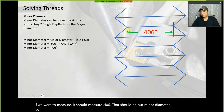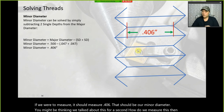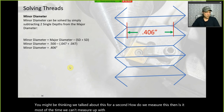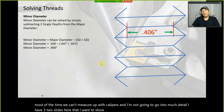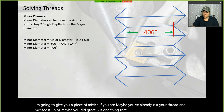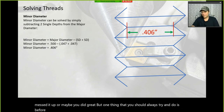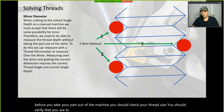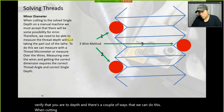You might be wondering how we actually measure this, since most of the time we can't measure it with calipers. Before you take your part out of the machine, you should check your thread size and verify that you are to depth. There are a couple of ways to do this when cutting to the solved single depth of 47 thou.